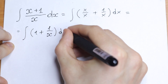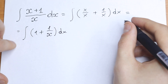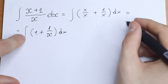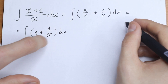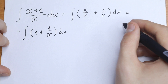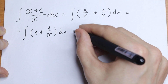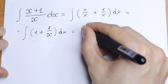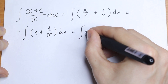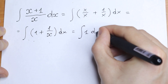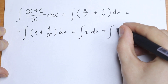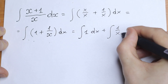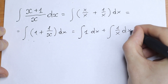And we all know the properties: if we have the integral of a sum, we can integrate all of the elements separately. So we will have integral of 1 dx plus integral of 1/x dx.